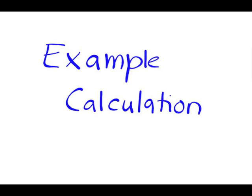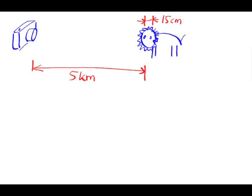Let's have a look at a calculation applying this formula. A camera is supposed to be able to take a picture of a lion from a safe distance of 5 kilometers. The eyes of the lion are just 15 centimeters apart and are supposed to be resolved on the image.